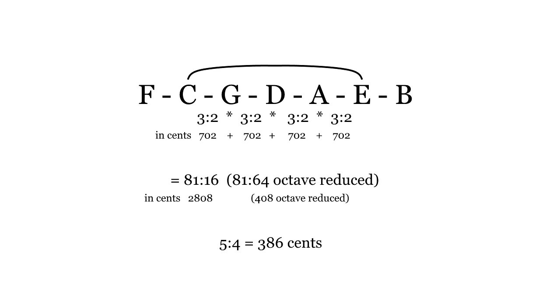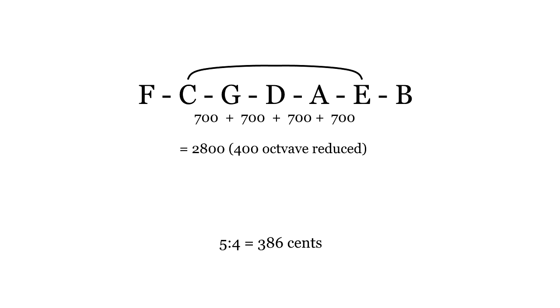That's significantly sharper than five to four, the just ratio of the major third. If the fifth is tuned a bit flatter than just, the major third will improve. Twelve tet's fifth is only two cents flat, so the major third is still somewhat sharp.